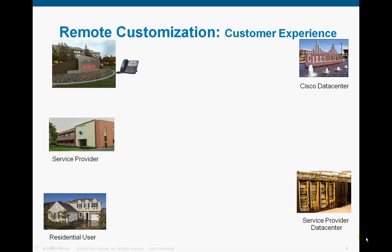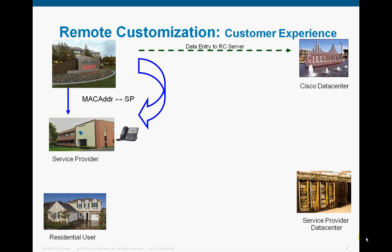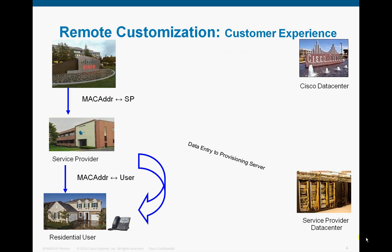Imagine at the top left: the device is manufactured at Cisco's factory and is then sold to a service provider. A data entry is sent to Cisco's data center. At the same time, the device's MAC address is associated with the service provider. When the service provider sells the device, the service provider associates the MAC address with the customer that purchased the device, and at that point sends an entry to its provisioning server associating the MAC address with the user.